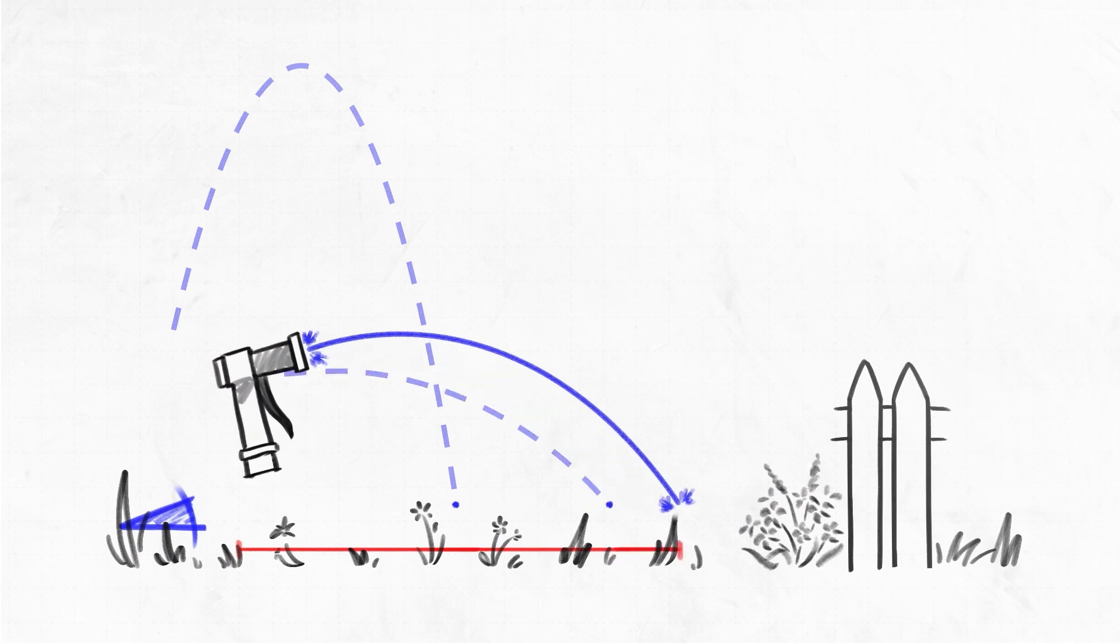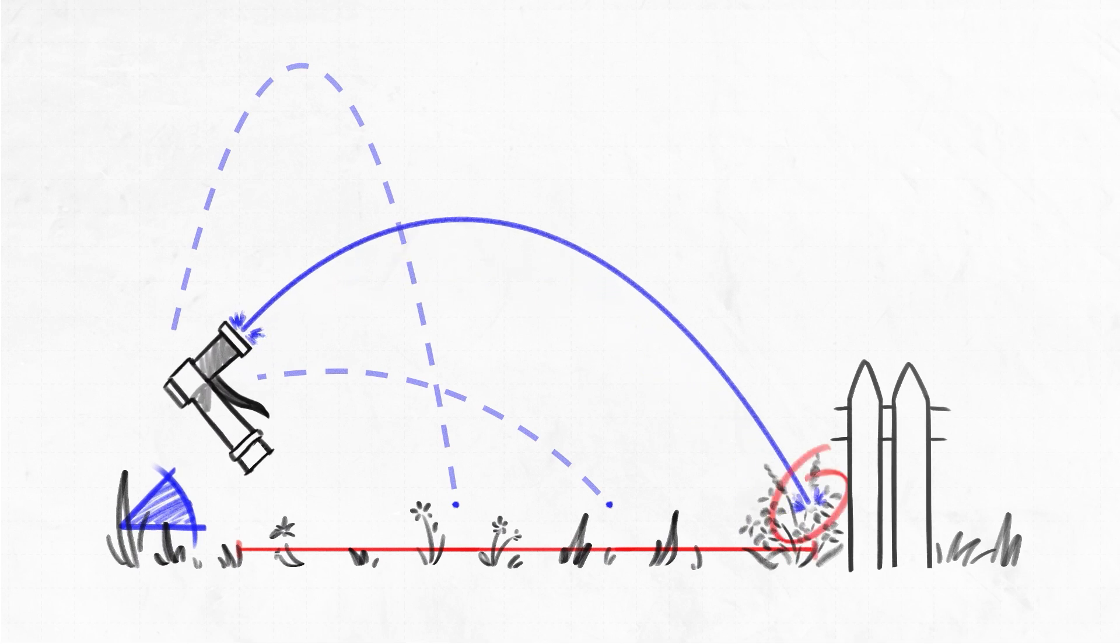Somewhere in between those two is the correct height for us to hold our arm to get maximum distance from the spigot.